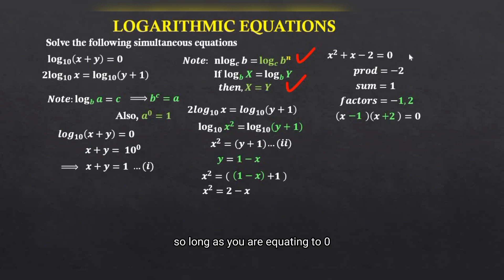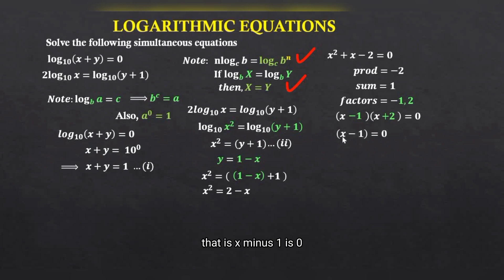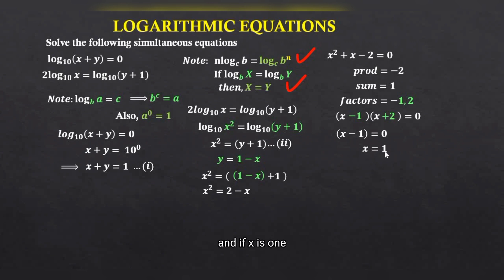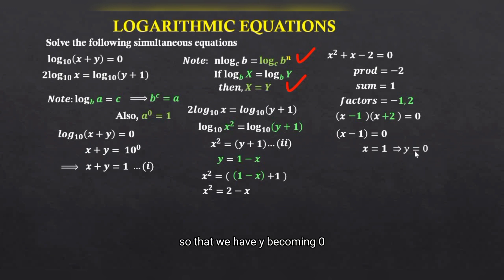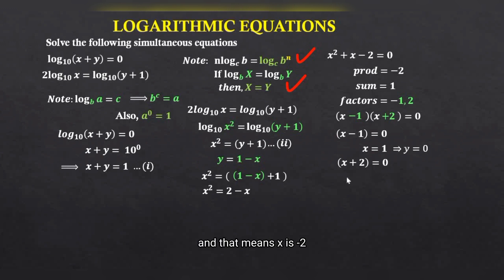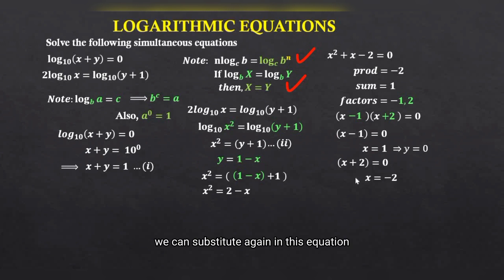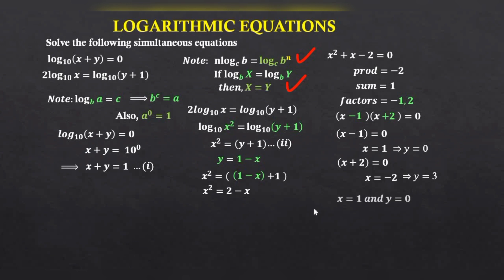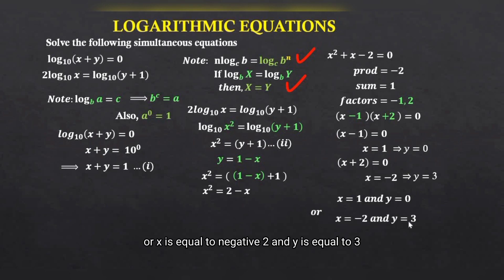Equating each bracket to zero: from x minus 1 equals 0, we get x equals 1, and substituting back gives y equals 0. From x plus 2 equals 0, we get x equals negative 2, and substituting gives y equals 3. Therefore, the solutions are x equals 1 and y equals 0, or x equals negative 2 and y equals 3.